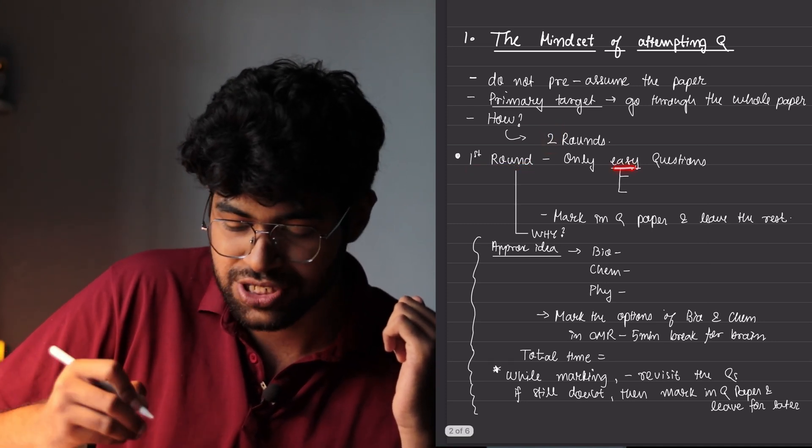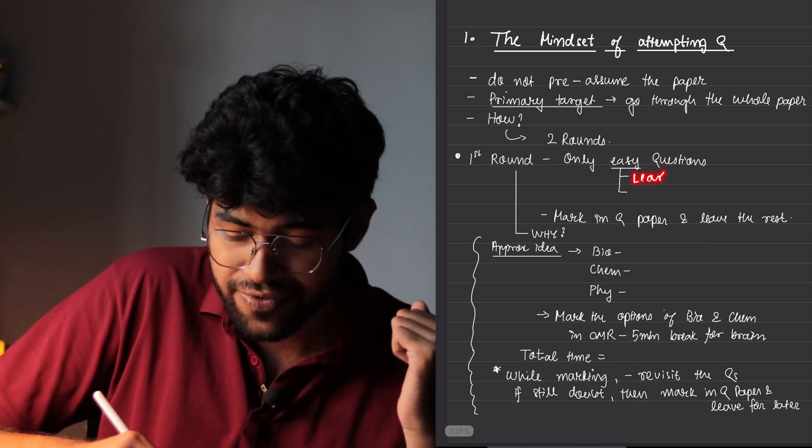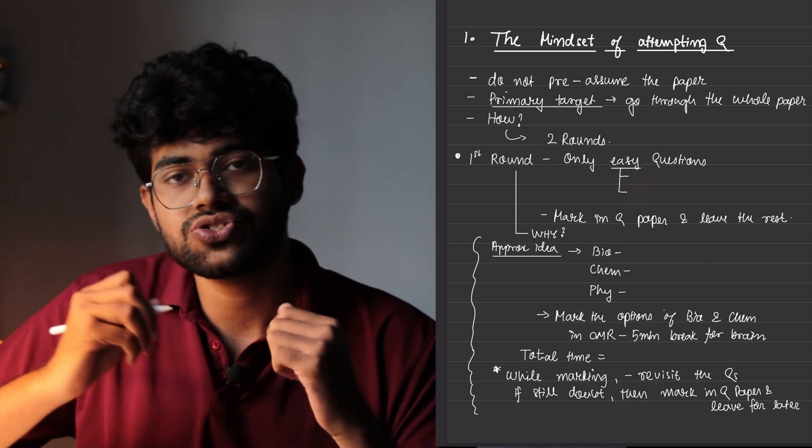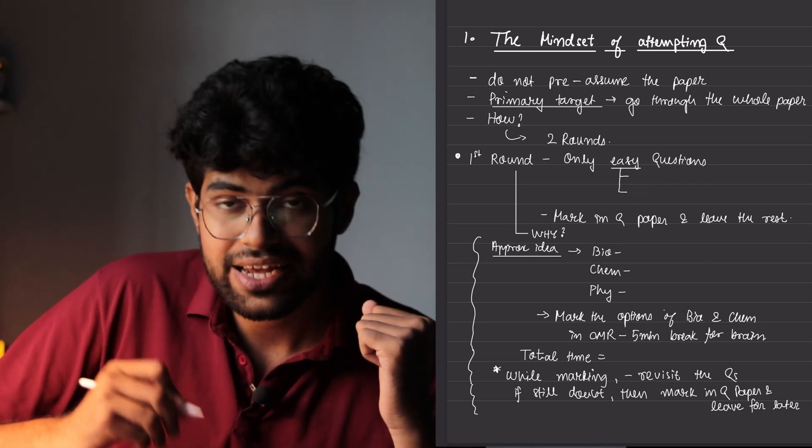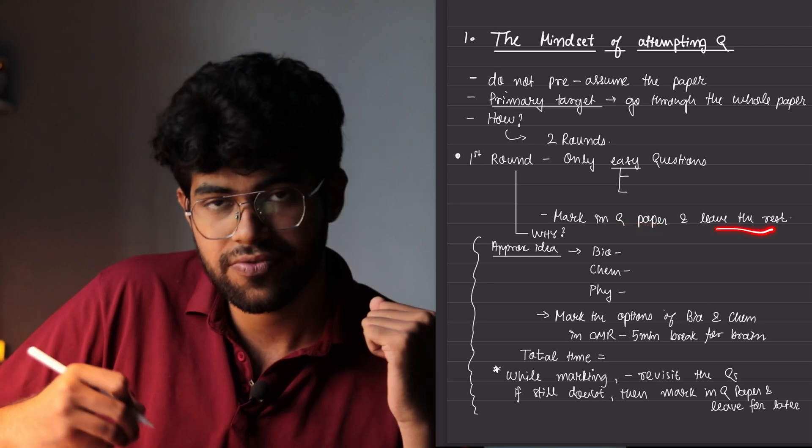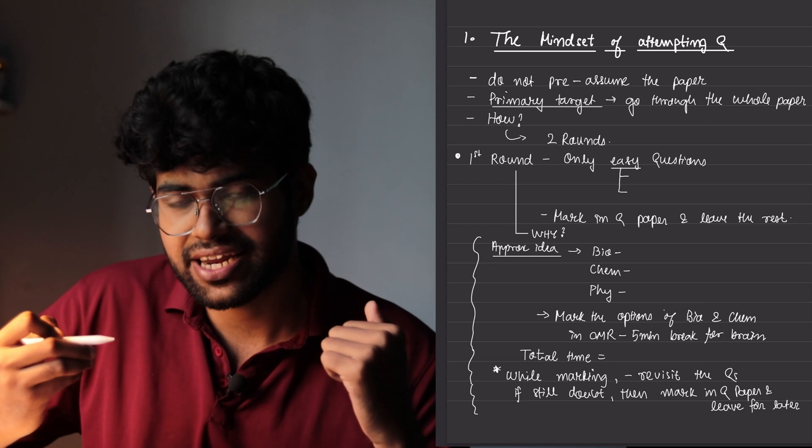Why? I'm going to say you now. So in the first round, you only do the easy questions. That is the questions that will take the least amount of time and the questions that you know you can do. You can solve it very easily. The rest questions you mark in the question paper and you leave for later. Now, why do you have to do this? Let me give you a approximate idea.